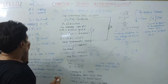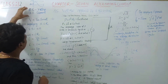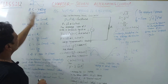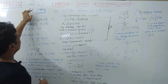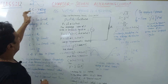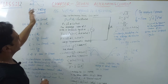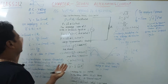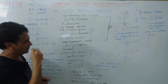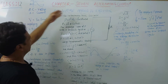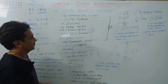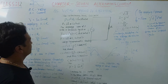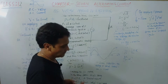AC voltage and AC current — it is just a name given by scientists for this chapter on alternating current. So this is a known name for AC voltage and AC current. Now we will discuss this.